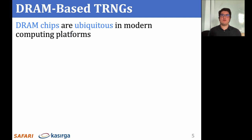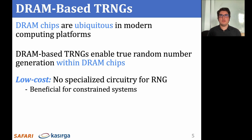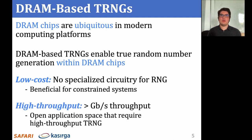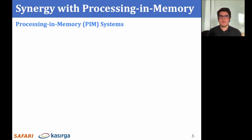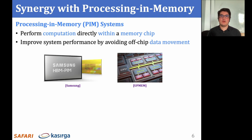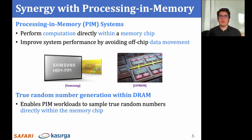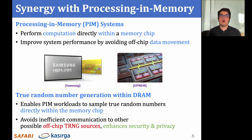DRAM is commonly used as main memory in a wide range of computing systems. TRNGs based on DRAM enable true random number generation within DRAM chips. DRAM-based TRNGs are particularly useful for supporting true random number generation in constrained systems as they can be implemented at low hardware cost. DRAM-based TRNGs can also provide true random numbers at high throughput, which can open the application space in computing systems that lack dedicated TRNG hardware. DRAM-based TRNGs are synergistic with processing-in-memory systems in particular. PIM systems typically perform computation directly within a memory chip, which improves overall system performance by avoiding unnecessary data movement. True random number generation within DRAM enables PIM workloads to sample true randoms directly within the memory chip, and avoids inefficient communication to other off-chip TRNG sources, thereby enhancing the overall security and privacy of PIM systems.